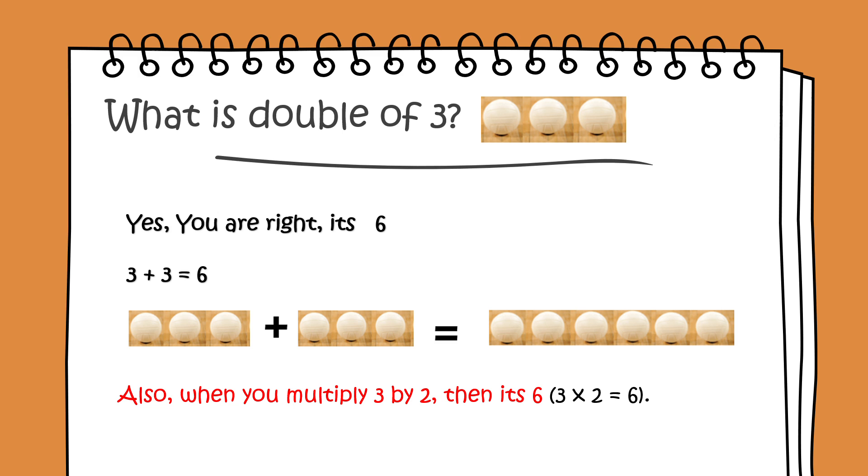What is double of three? Yes, you're right, it's six. Three plus three is six. Also, when you multiply three by two, then it's six. Three multiplied by two is six.